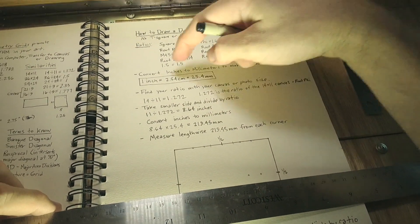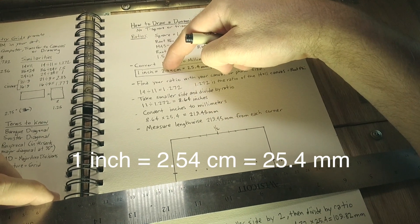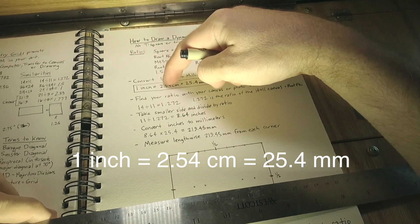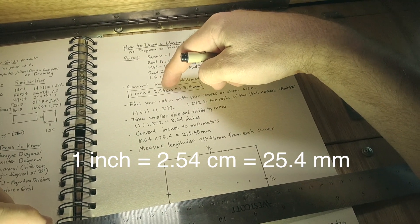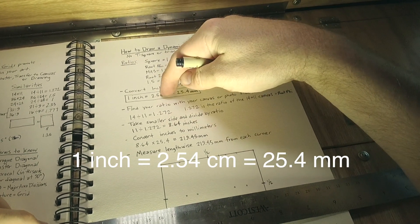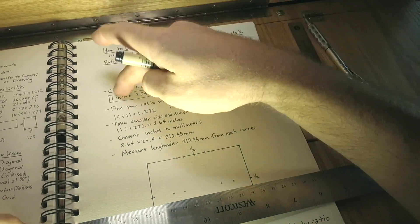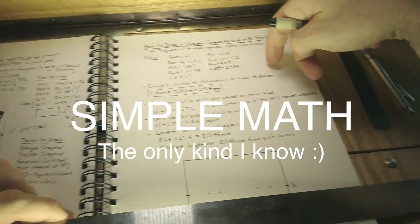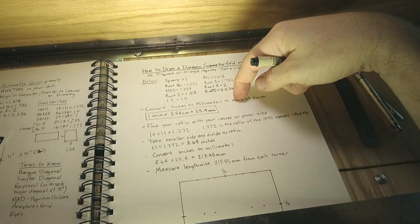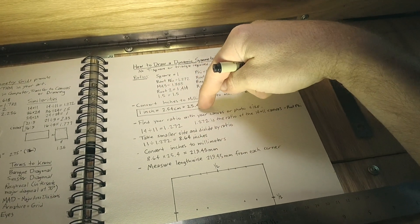I've got a little key up here and we can see one inch equals 2.54 centimeters and there's 10 millimeters in every centimeter. So that means 2.54 centimeters equals 25.4 millimeters. This is real simple math, you guys. So just use your calculator. So now we know one inch equals 25.4 millimeters.